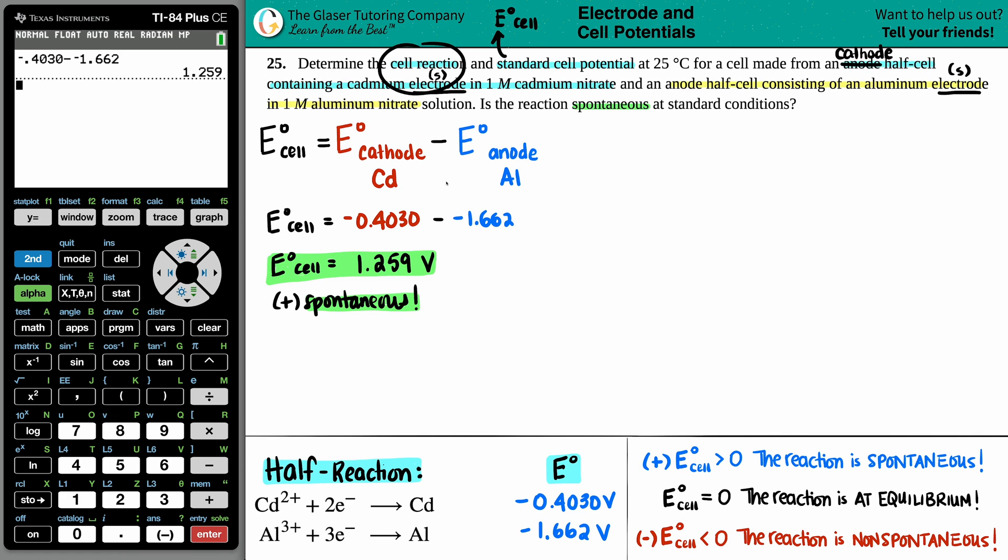Now let's find the balanced equation, aka the cell reaction. This is where we're going to be using our two half cells to combine them into making one balanced equation. So we already stated that the cathode was the Cd and the cathode formulas are always when your electrons are on the left side. So this is the cathode. So I don't have to do anything with this equation. So I'm just going to rewrite it.